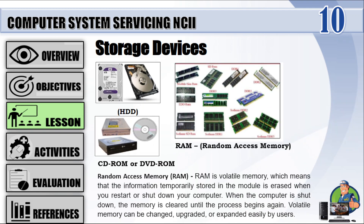Random Access Memory (RAM) is volatile memory, which means that the information temporarily stored in the module is erased when you restart or shut down your computer. When the computer is shut down, the memory is cleared until the process begins again. Volatile memory can be changed, upgraded, or expanded easily by users. There are two types of RAM: static RAM and dynamic RAM.